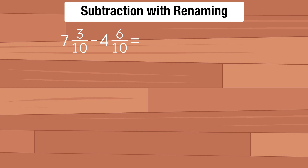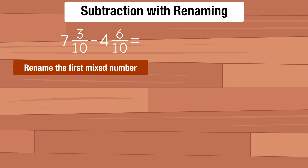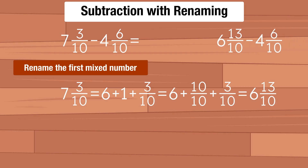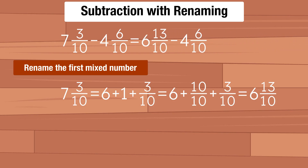The first option is to rename the first mixed number. We can write 7 and 3 tenths as 6 plus 1 plus 3 tenths. We know that 1 is the same as 10 tenths, so we can write 6 plus 10 tenths plus 3 tenths, which gives us 6 and 13 tenths. Now, instead of writing 7 and 3 tenths, we can write 6 and 13 tenths. We subtract the fractional parts: 13 tenths minus 6 tenths gives us 7 tenths. Next we subtract the whole number parts: 6 minus 4 gives us 2. So the final answer is 2 and 7 tenths.